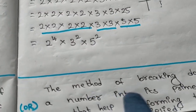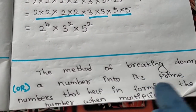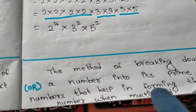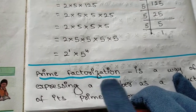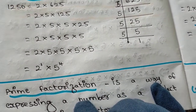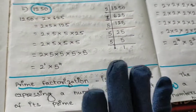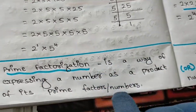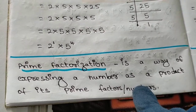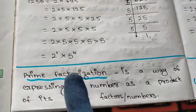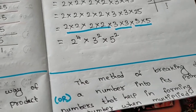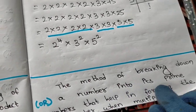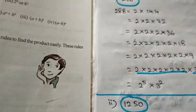In other words, it is the method of breaking down a number into its prime numbers that help in forming the number when multiplied. Both definitions are easy — whichever you find easy, you learn it. This is a topic we have been learning since class 5, class 6, and class 7. Prime numbers are the numbers which have only two factors: one is number 1 and the other is the number itself.